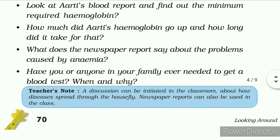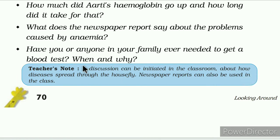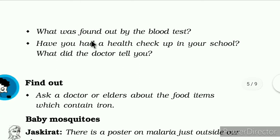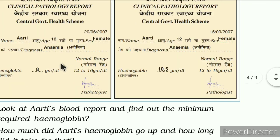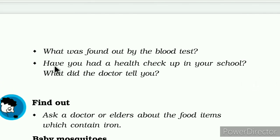Have you or anyone in your family ever needed to go for a blood test? When and why? If someone has had a blood test, you will have to write when and why — you will write it yourself. What was found out by the blood test report? Have you had a health checkup in your school? What did the doctor tell you? If yes, write what the doctor told you. I hope you will complete the work and tomorrow we will proceed further. Thank you and have a nice day.